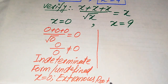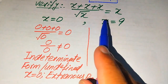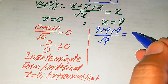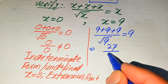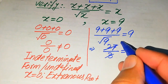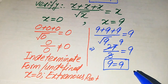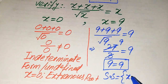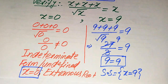Now we check x equals 9. When we put x equals 9 on both sides it becomes 9 plus 9 plus 9 divided by square root of 9 equals 9. Adding 9 three times gives 27, and square root of 9 equals 3, so we get 27 over 3 equals 9, which gives 9 equals 9. Both sides are equal, so we finally conclude that x equals 9 is the solution set of the given equation, and x equals 0 is the extraneous root. This is the final solution from the first method.